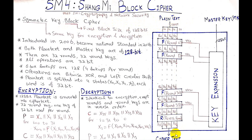For each block of input we will generate the corresponding cipher text. We will have a master key which is used for producing randomness in the function. SM4 was introduced in 2006 and became the national standard of China in 2016. You can pause the video to read the description if needed.